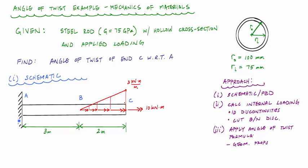The way I'm going to do this problem is very typical of many mechanics problems: you start off with the schematic or free body diagram, you understand the drawing, then you make a bunch of cuts and calculate internal loading using equilibrium equations. I like to identify the discontinuities and cut between discontinuities. This lets you identify the segments for which you calculate the angle of twist, and last but not least, we apply the angle of twist formula, which requires geometric properties — namely the polar moment of inertia, which is the area's resistance to twisting.